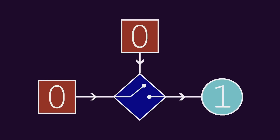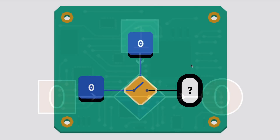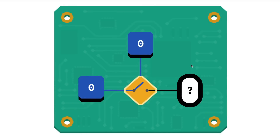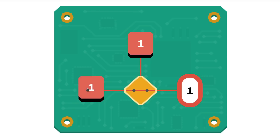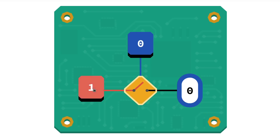Maybe that was a lot, so let's slow things down and play with this interactive diagram. When the transistor is switched on via a high voltage in the word line, the bit line becomes electrically connected to the capacitor, causing the capacitor to take on whatever voltage is present in the bit line. This is how we write to memory. On the other hand, when the transistor is switched off via a low voltage in the word line, the connection between the bit line and the capacitor is broken, causing the capacitor to hold on to its most recently stored value. This is how we store something in memory.